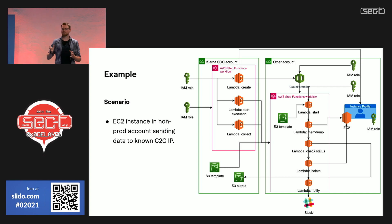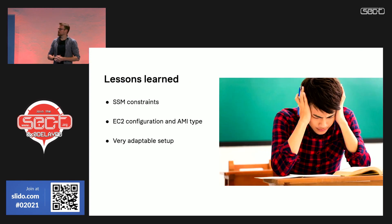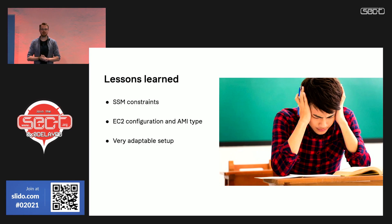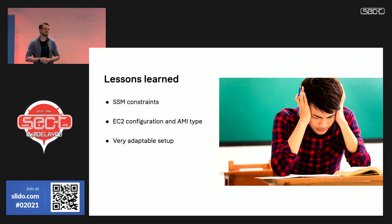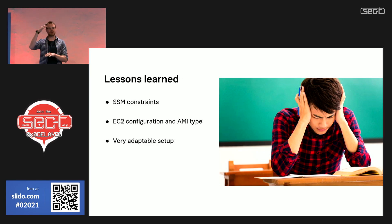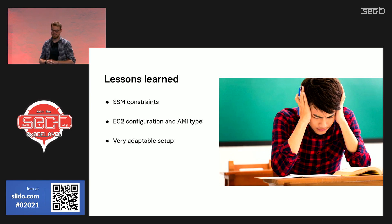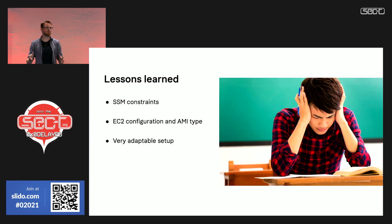Depending on the case, we might do different things and spin up different resources. Lessons learned: it's not easy. There are a lot of timing constraints to consider in AWS as well as for SSM. If certain SSM commands are failing, we need to take that into account and adapt our track in the Step Function, routing to a different Lambda that will take other actions if the first one fails.